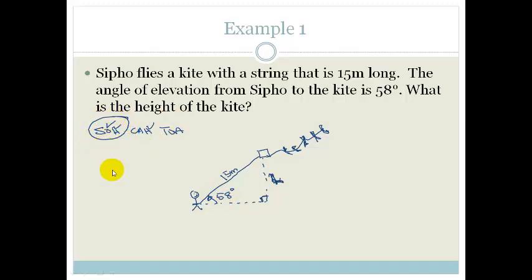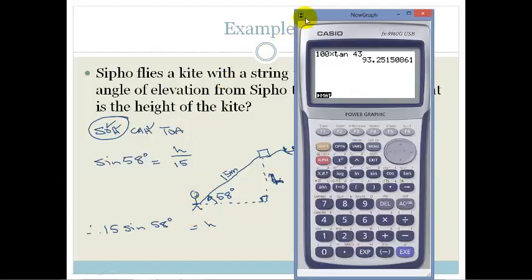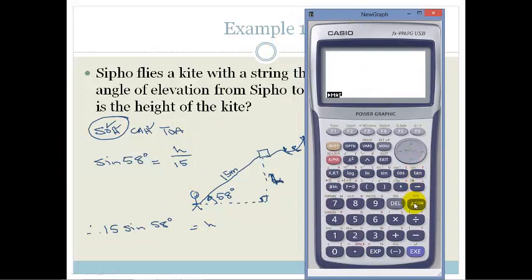We want the height, but the height is opposite to the 58 degrees. So therefore, it is opposite. So therefore, we're going to be using sine. So we know that sine of 58 degrees is equal to the opposite, which is the H, over 15. Therefore, we've got 15 times the sine of 58 degrees is equal to H. And then we find our calculator and we pop it in. So we just clear it so we know what we're doing. We've got 15 times sine of 58 and we end up with 12.72.